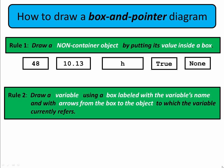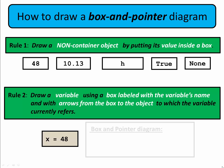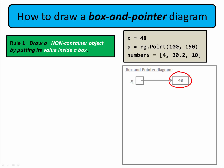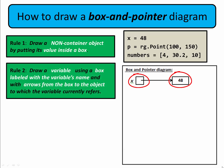Rule two: draw a variable using a box labeled with the variable's name, and with an arrow from the box to the object to which the variable currently refers. For example, if we have a variable x that's been assigned the value 48, the box and pointer diagram would have a box, then beside it the variable x, then an arrow from that box to the object 48.